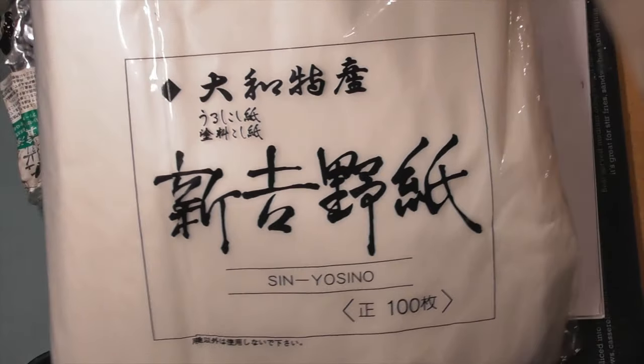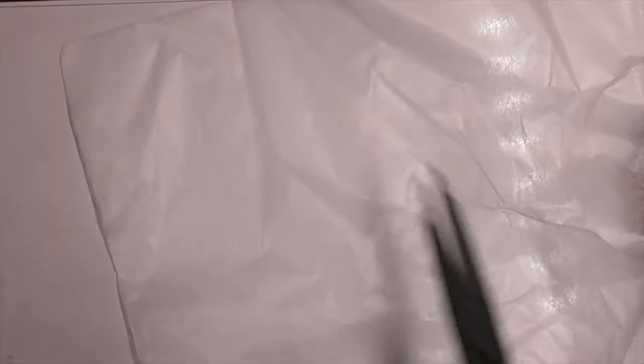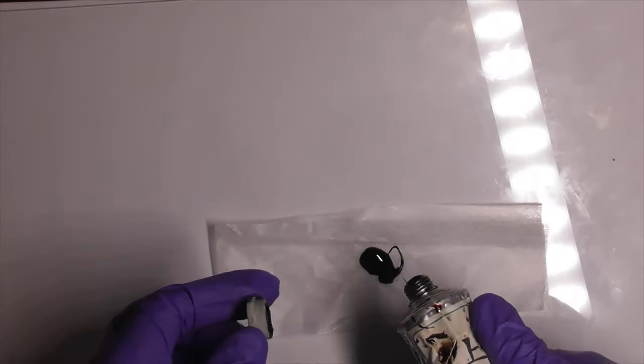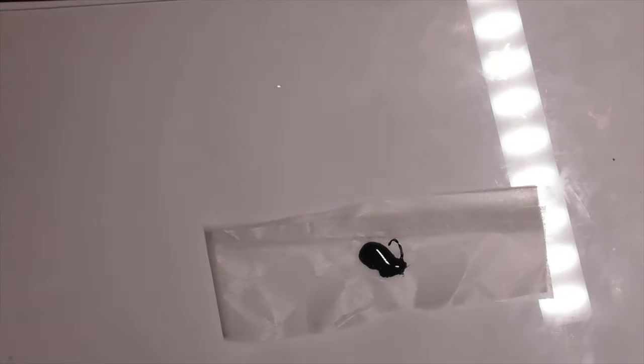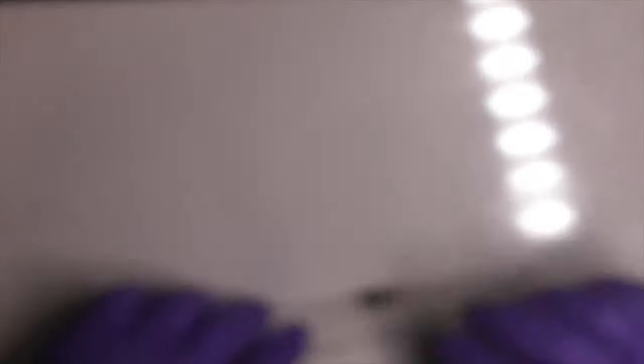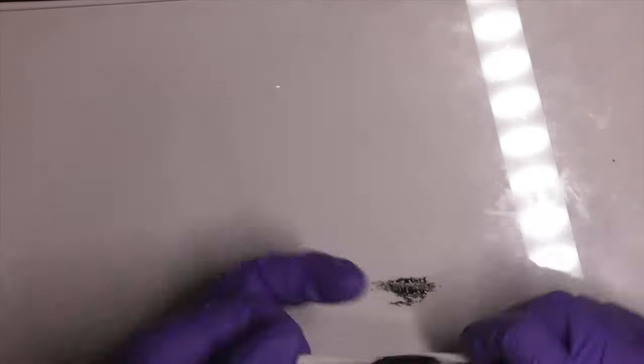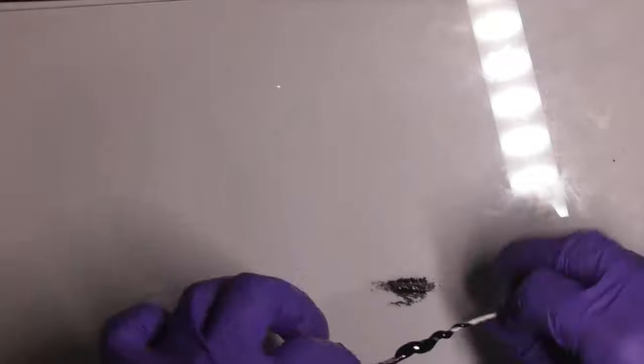Step four, filter some black Urushi with sin yashino paper. Cut a 7 cm wide stripe and fold it into half to create a 2 layer filter. Add the black Urushi onto the middle of the paper. Fold it into half and roll from the top. Twist the paper to squeeze out the filtered Urushi.